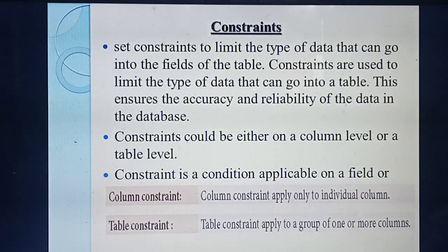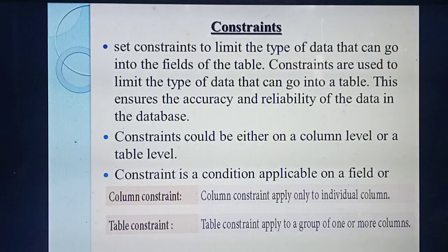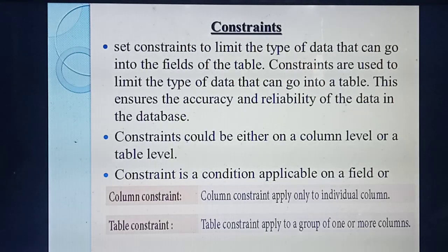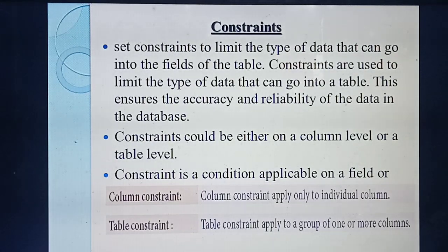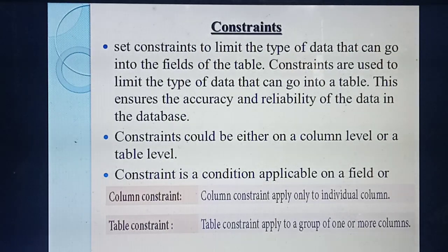There are two kinds of constraints — column-level and table-level. What do you mean by column constraint? Column constraint means the condition is applied to an individual column. For example, if the table has 3, 4, or 5 columns like name, age, gender, and you apply a condition for only one column, that is called a column constraint. Column constraint means you are applying a condition for only one column.